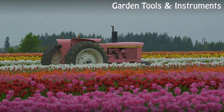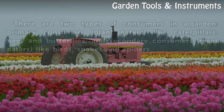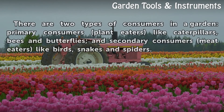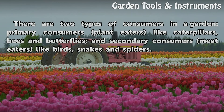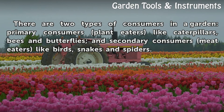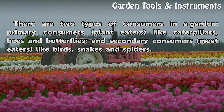Consumers. There are two types of consumers in a garden: primary consumers — plant eaters like caterpillars, bees and butterflies — and secondary consumers — meat eaters like birds, snakes and spiders.